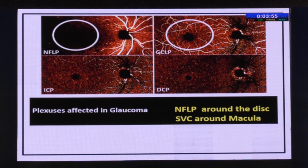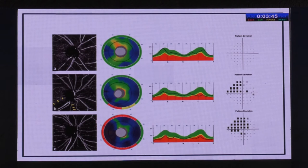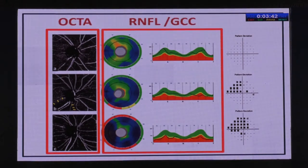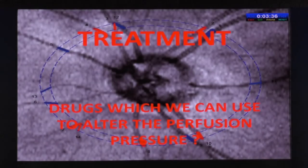With OCTA you'll be able to see charts, graphs, and figures showing capillary dropout alongside the RNFL defect — and this serves as an aid. Together with RNFL, GCC, and HFA analysis, all three together will help you better analyze glaucoma.